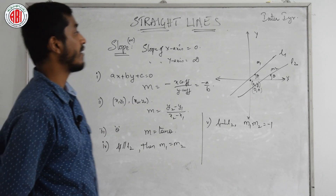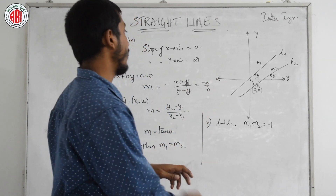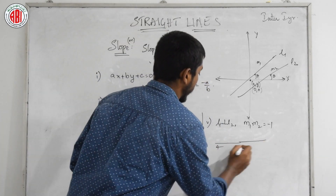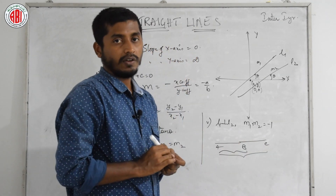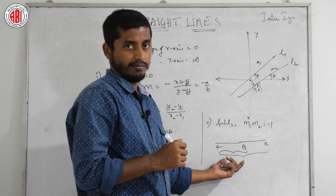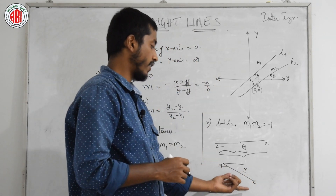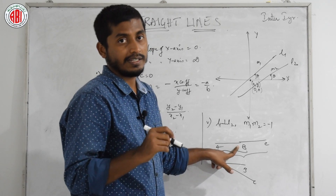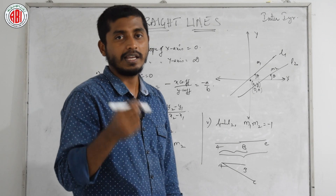We can also discuss collinearity. When three given points are said to be collinear, we can check that the slope of AB is equal to the slope of AC. If slope of AB equals slope of AC, then points A, B, and C are collinear — meaning they lie on the same line.